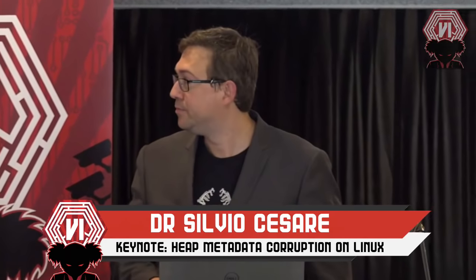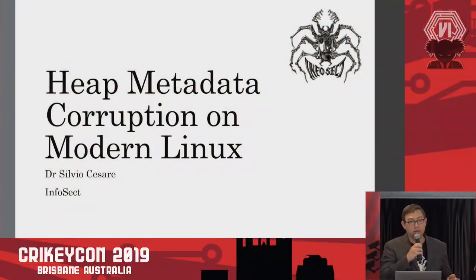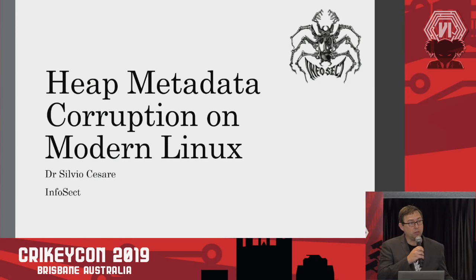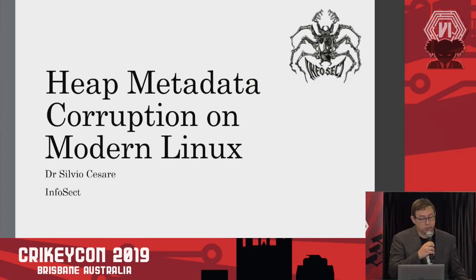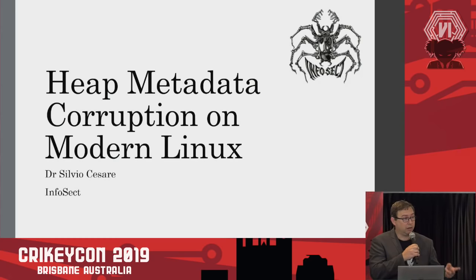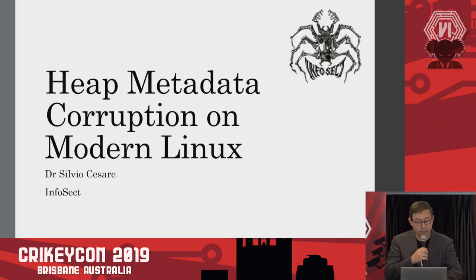Thank you very much. This talk is about heap metadata corruption on modern Linux. Effectively, I'm looking at taking memory corruption bugs and other C programming bugs and turning them into useful exploit primitives on current glibc PT malloc 2, and also a few other allocators. By the end of this talk, I hope everyone realises that heap corruption is still an active area of research, with exploitation avenues available on current day systems, even with mitigations such as heap hardening.